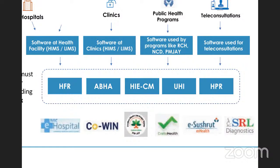HFR stands for Health Facility Registry and HPR stands for Health Professional Registry. HFR will provide a list of all public hospitals, private hospitals, clinics, pharmacies, diagnostic labs, nursing homes, etc. — so as a patient, you will have a list of all authorized and listed healthcare service providers. HPR similarly will have a list of all healthcare professionals — all approved medical professionals, whether AYUSH or allopathy doctors.